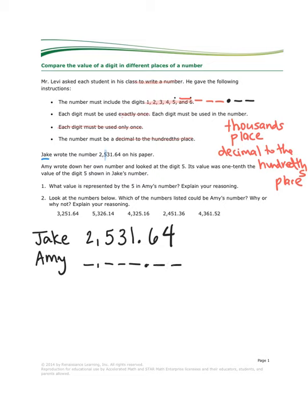And Amy wrote down some other number, we don't know yet what she wrote down, other than we know that she followed the rules of the assignment. And she looked at her digit 5, and her digit 5 had a value that was one-tenth the value of the digit 5 shown in Jake's number.